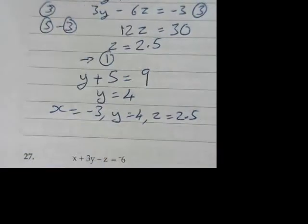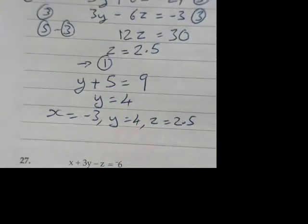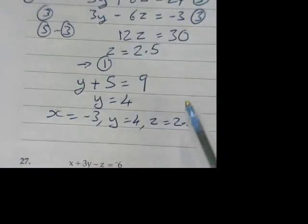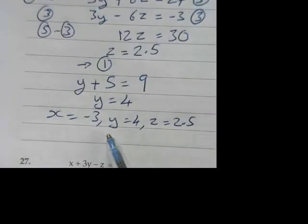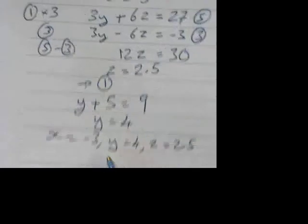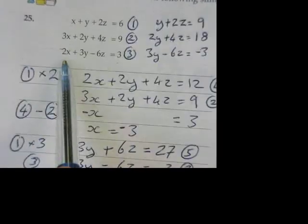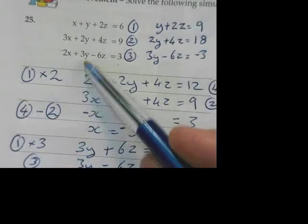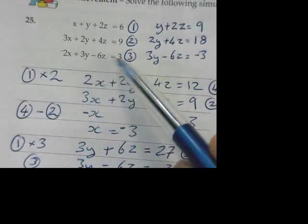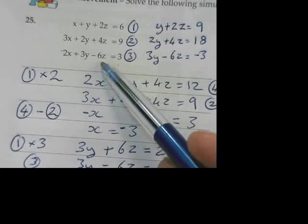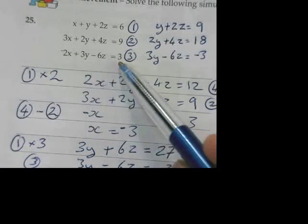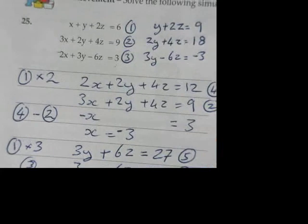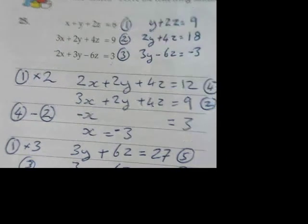And there's nothing wrong with you now checking by putting those numbers back into one of the earlier ones. Just to make sure things work. So if I put those values into say this one, that's going to be positive 6 plus 12. So that's 18. Take away 15 is 3. It does. It works. And that's basically the elimination method.